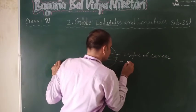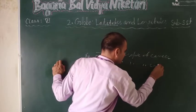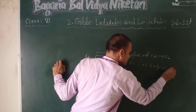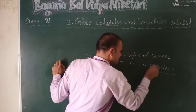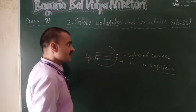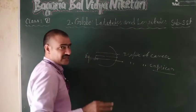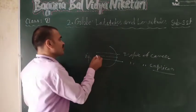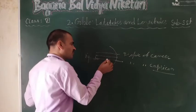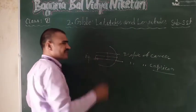This is the Tropic of Capricorn. This is the heat zone. Zero degree is the equator. Tropic of Cancer and Tropic of Capricorn — this is the torrid zone.